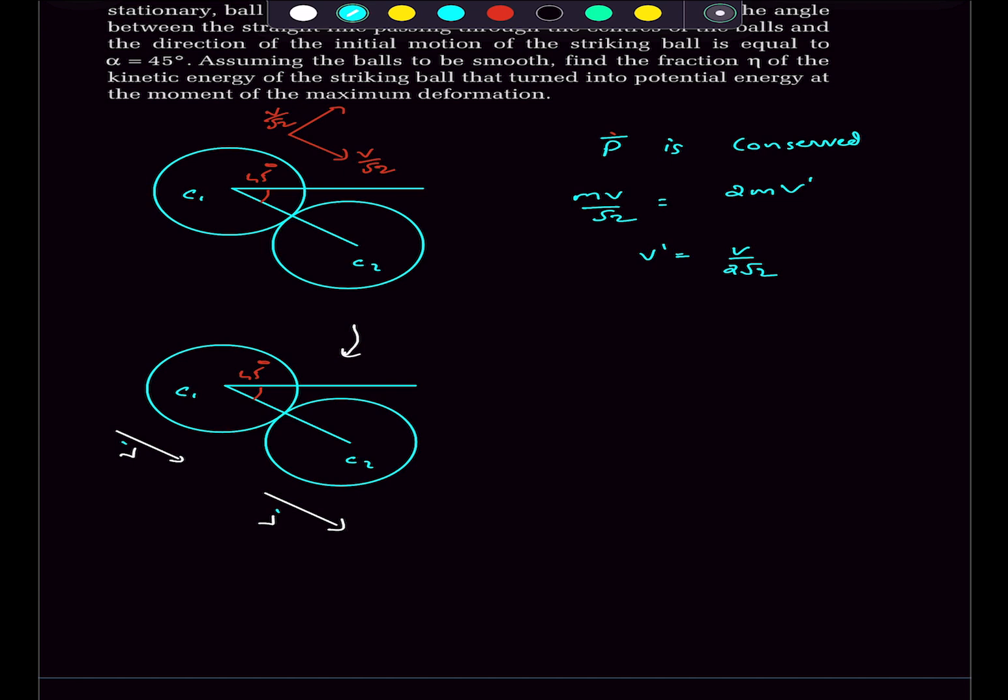So now all we have to do is energy conservation. We have to find the fraction of kinetic energy that turned into potential energy. So all we have to do is find the change in kinetic energy because that would change into the potential energy. And also remember this ball had the V by root 2 in this direction, which is not going to change.